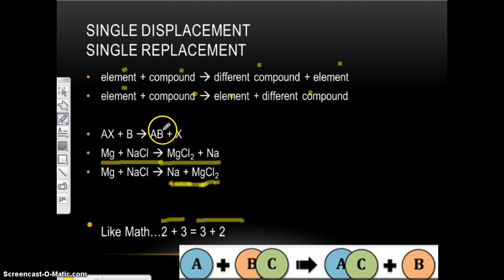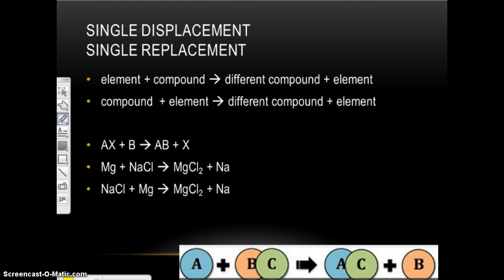It doesn't matter as long as you keep them on the correct side of the arrow, of the yield. Same thing when I start out, I can have element compound or compound element. It doesn't matter. Okay? As long as you have one element and one compound, you know it's a single replacement reaction, or a single displacement. Same thing.